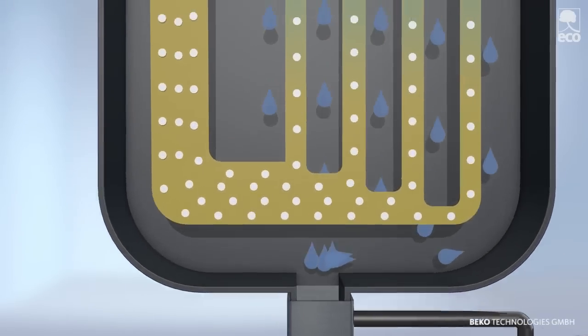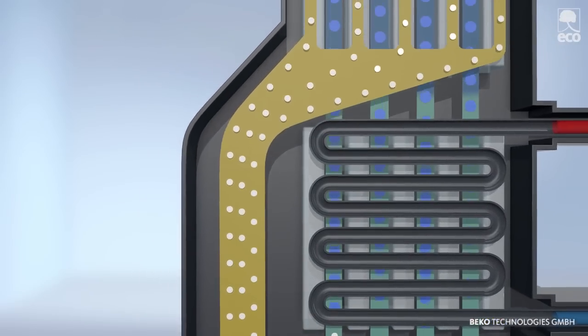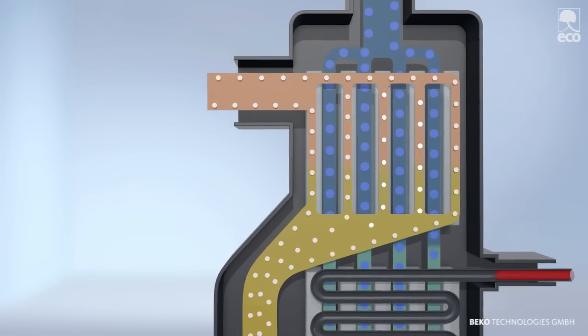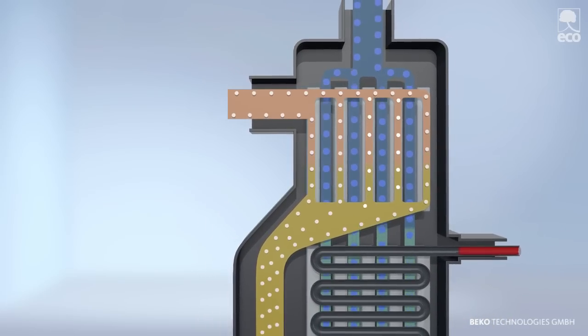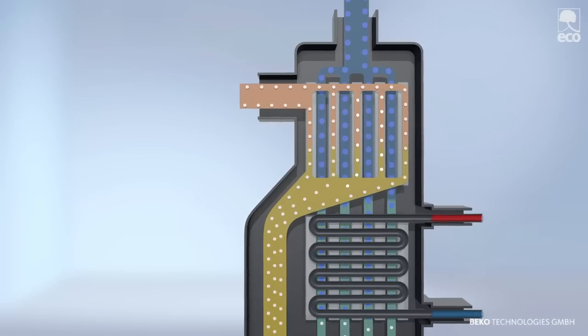The cool, dry compressed air next flows through the upper section, again past the entering air, cooling it in a counter current process, and is thereby reheated. This further reduces the relative humidity, making the air even drier.